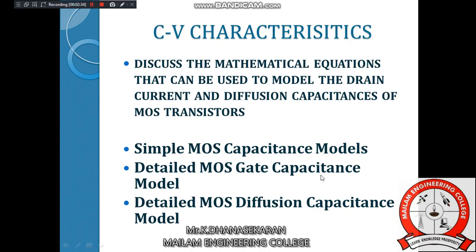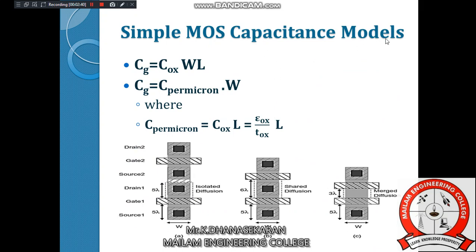Diagram A is nothing but isolated diffusion. Isolated diffusion is one method. Shared diffusion is one method. Merge diffusion is one method — these are the three types of diffusion configurations.